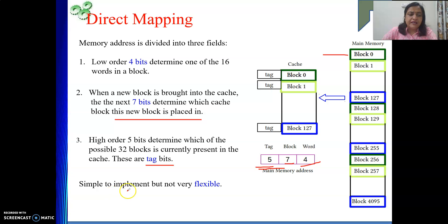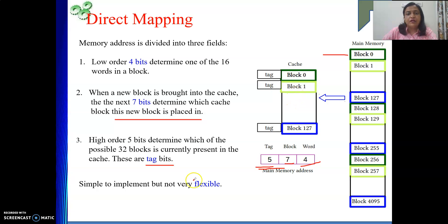Direct mapped cache is very easy to implement but not very flexible. It is not flexible because even though the cache is not full, we still need to do replacement - because we are fixing the position of each main memory block in the cache.